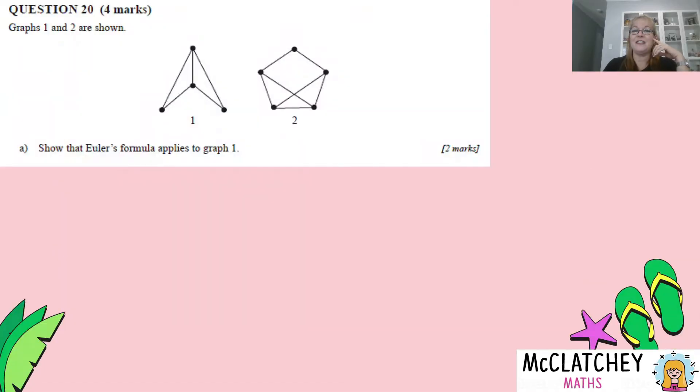Right, let's get straight into that first question. Question 20. It's worth four marks. Graphs 1 and 2 are shown here. Show that Euler's formula applies to graph 1 and this is worth two marks. So we're not interested in graph 2 just yet. We're going to focus on this one here.